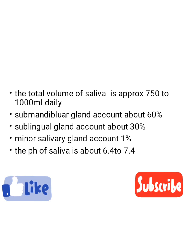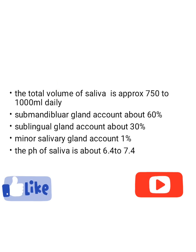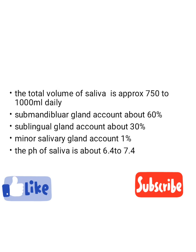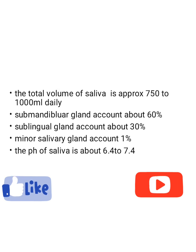The total volume of saliva is approximately 750 to 2000 ml daily. The submandibular gland accounts for about 60% of total saliva, the sublingual gland accounts for about 30%, and the minor salivary glands account for about 1%. The pH of saliva is 6.4 to 7.4.